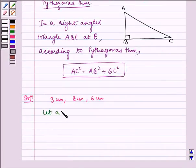So let a equals 3 cm, b equals 8 cm, and c equals 6 cm. Here we can see the largest side is b which equals 8 cm.